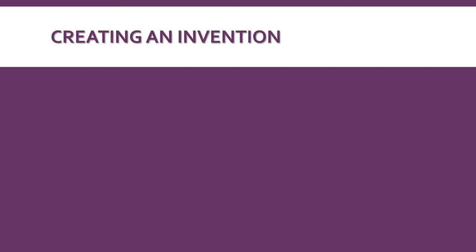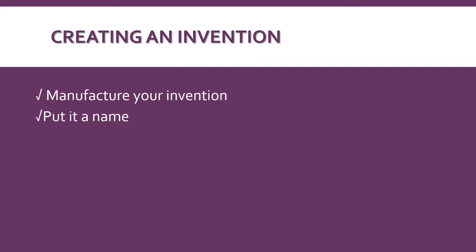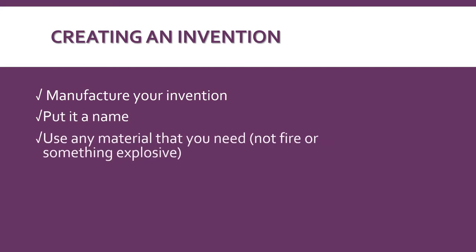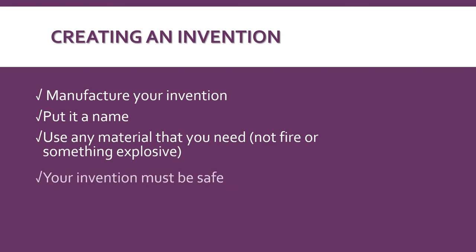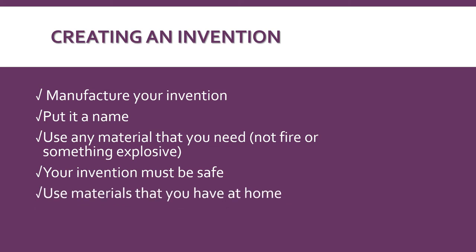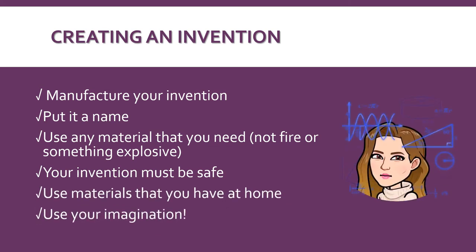Now I'm going to show you some steps you need to follow to create an invention. First you need to manufacture your invention, put it a name, use any material that you need — not fire or something explosive — your invention must be safe. Use materials that you have at home and finally use your imagination.